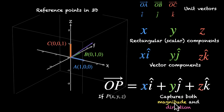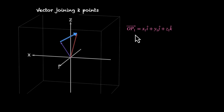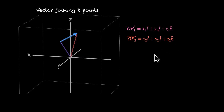This way of writing a vector gives us both its magnitude and direction. We can also use this to find vectors that are not position vectors — for example, the vector joining two different points. We need the position vectors of the initial and terminal points. Let P1 be the initial point with position vector OP1 = x1 i-cap + y1 j-cap + z1 k-cap, and P2 the terminal point with OP2 = x2 i-cap + y2 j-cap + z2 k-cap.